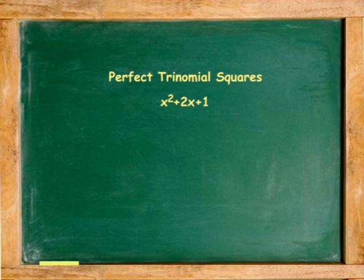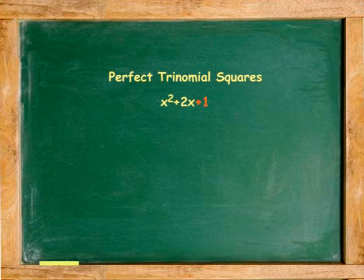For example, x² + 2x + 1 is a perfect trinomial square because the last term is positive and the first and last terms are perfect squares.